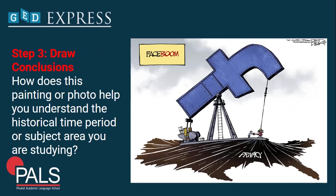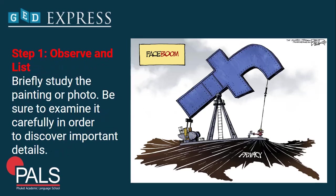Step three is Draw a Conclusion. Ask yourself: how does this painting or photo help you understand the historical time period or subject area you are studying? Is it relevant to the present time? Try to ask that question. Now let's go back and apply these steps — starting with Observe and List.